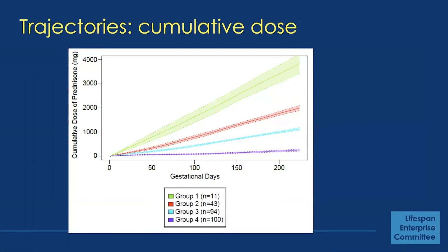They were then able to look at both trajectory approaches with their outcomes of interest to determine which better predicted the outcomes in the study. This really just shows that it is possible to model these methods with different types of exposure, including more intermittent or infrequent ones. You may just need to think about the underlying functional form of how you're mapping your data before running the trajectories.